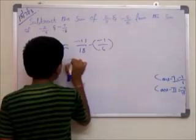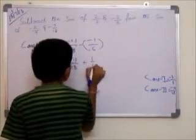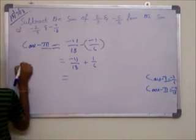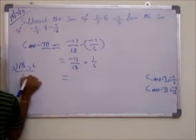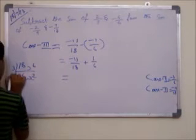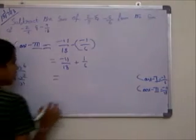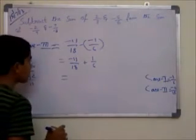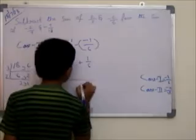Equal to minus 11 by 18 plus 1 by 6, equal to, and LCM plus 6 and 18 will check. 18, 6, 3 is 6 and 18, 3 2's are 6, 2 3's are 6, 2 1's are 2, 3 2's are 6, 3 3's are 9. 3 2's are 6, 3 3's are 18. So LCM is 18.